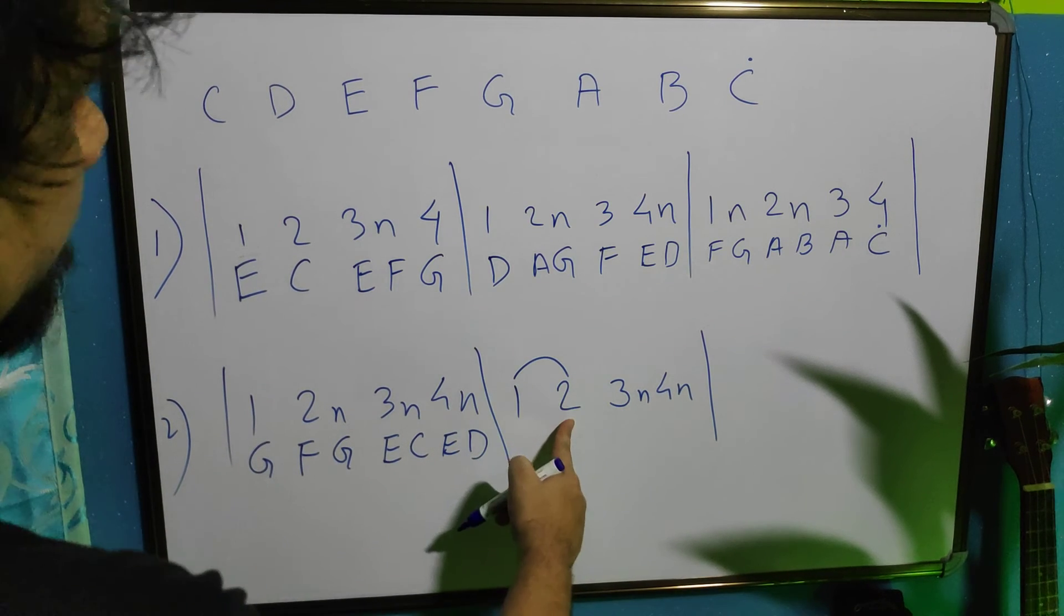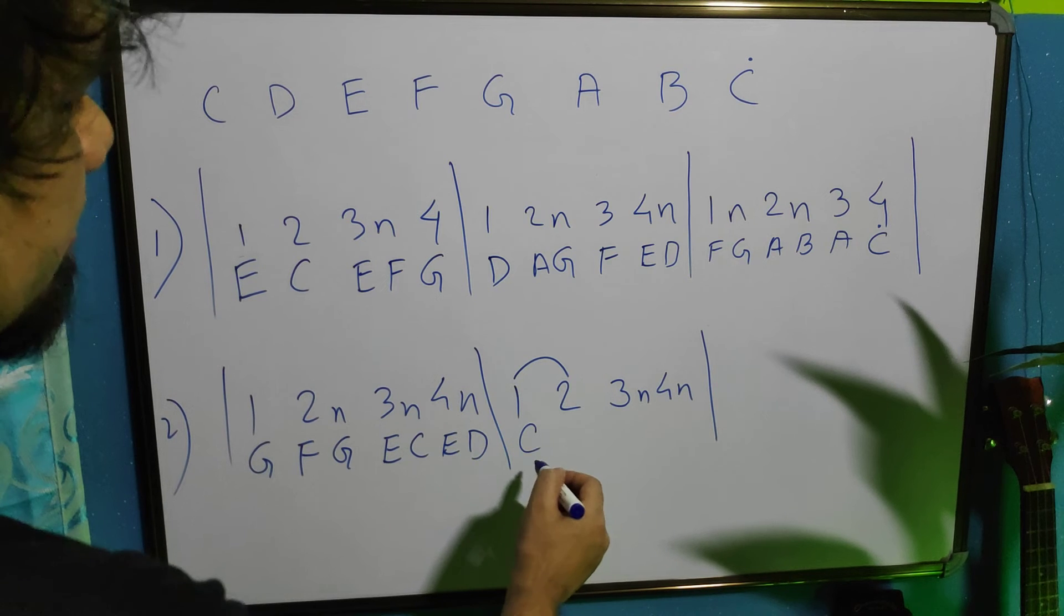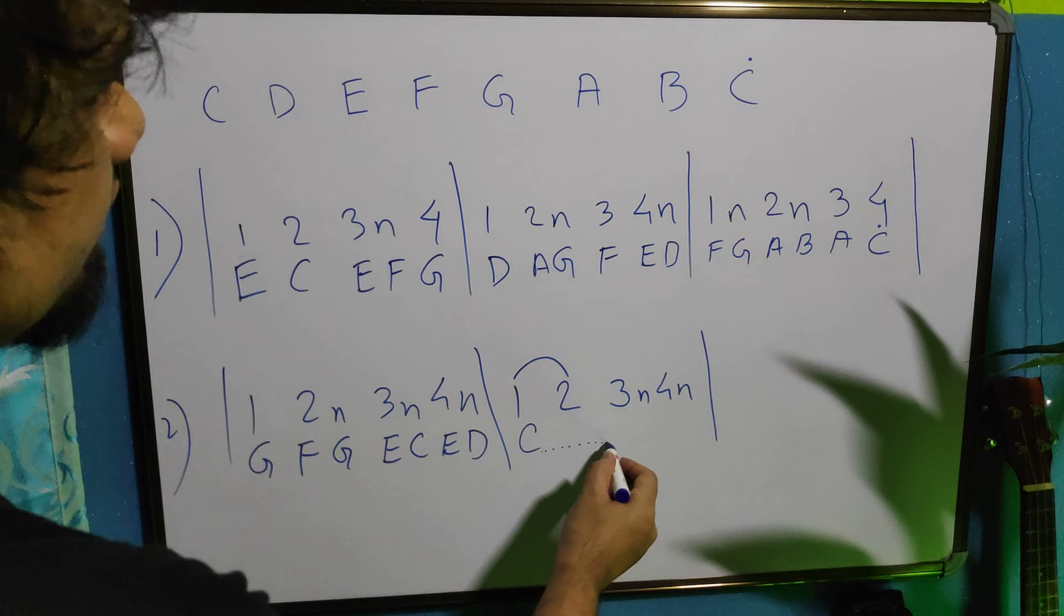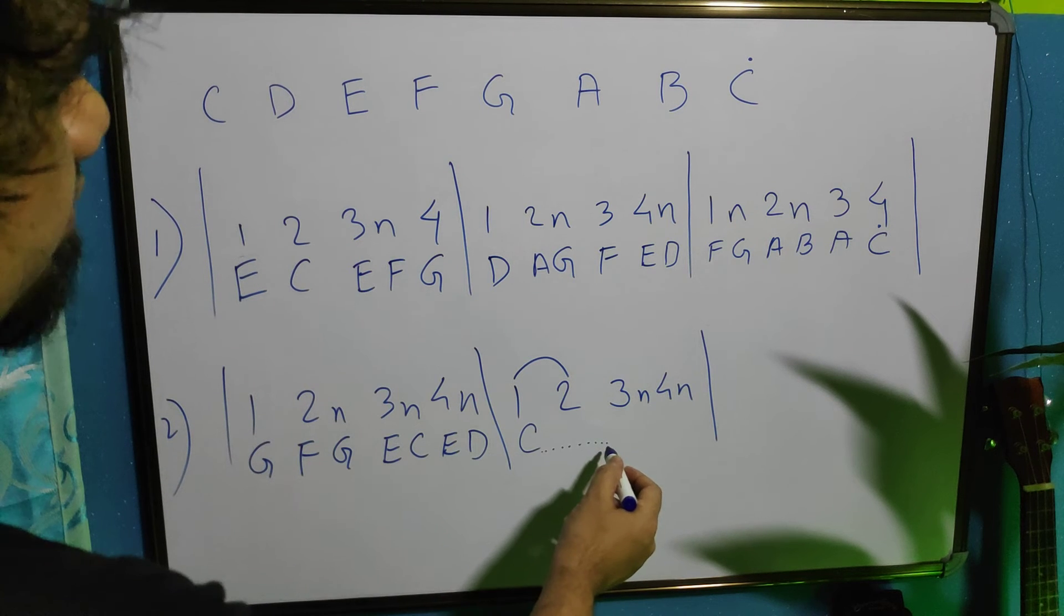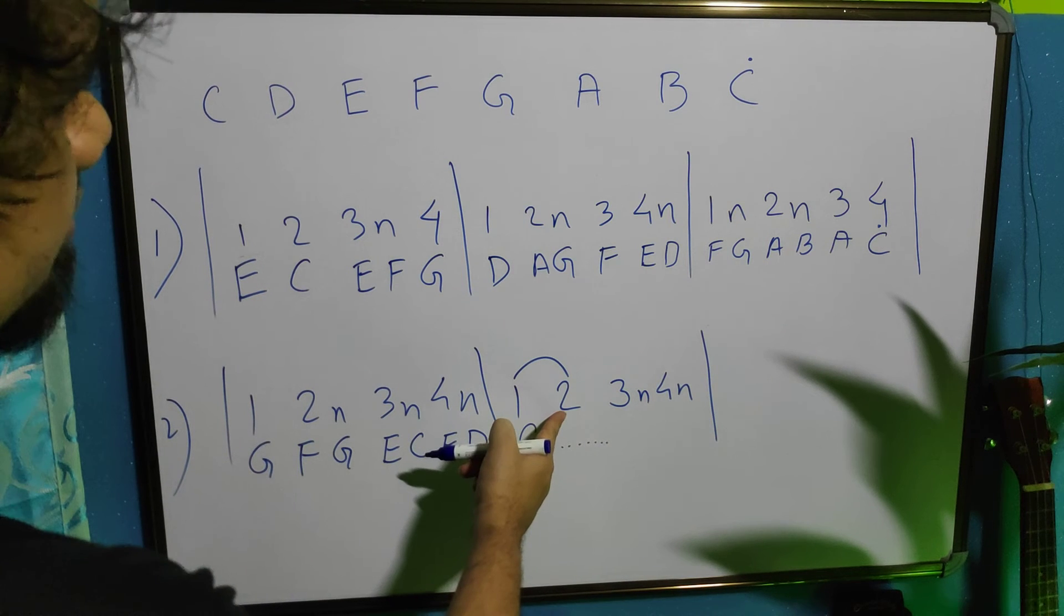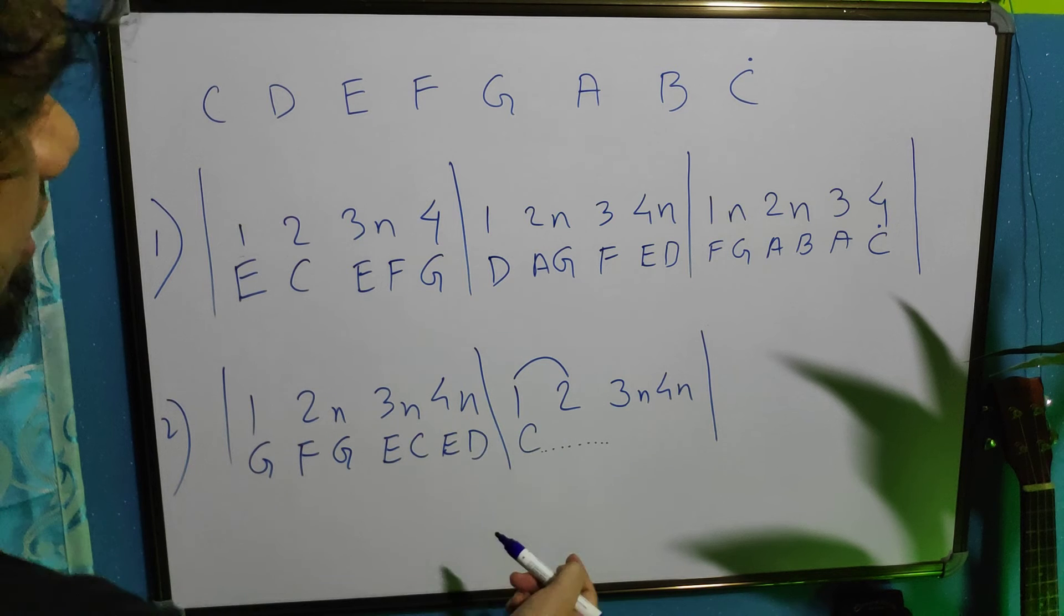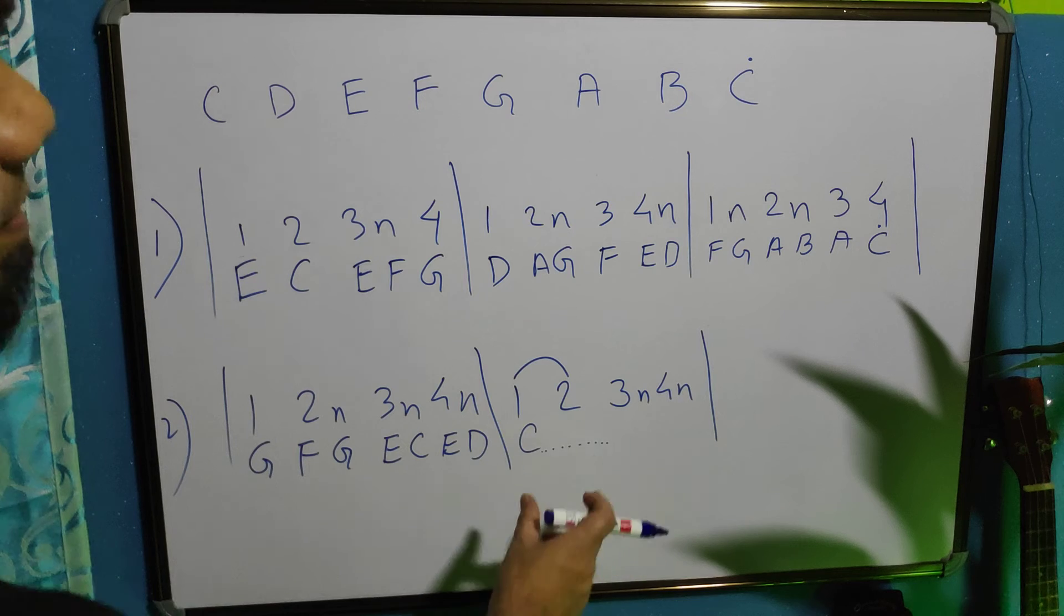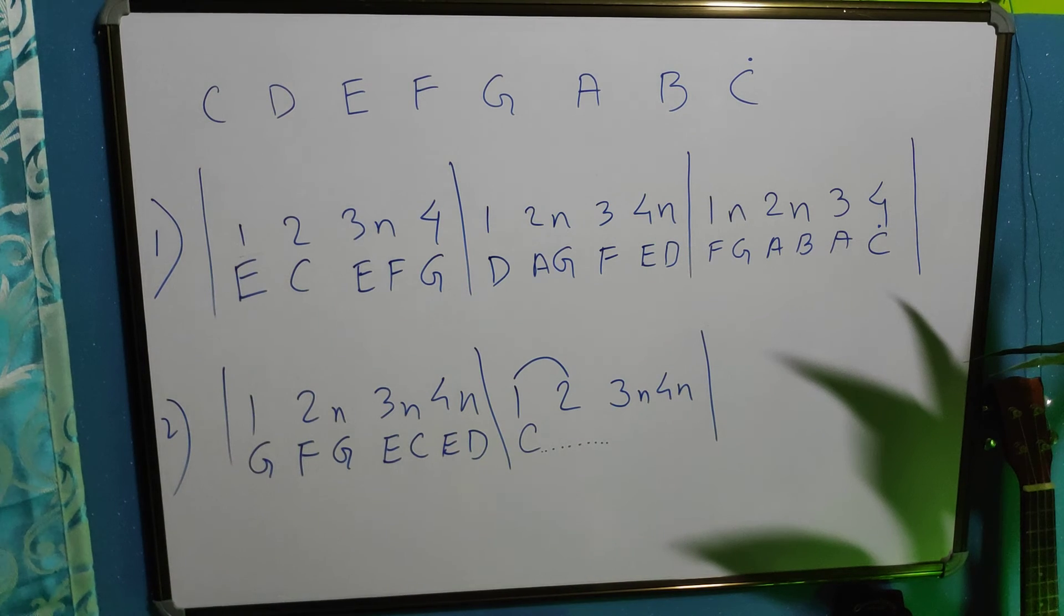Suppose we play here C. Then, the C will sound till the second note. We don't have to play the second beat. So, C will be a longer note. Technically, it is minim or a half note.